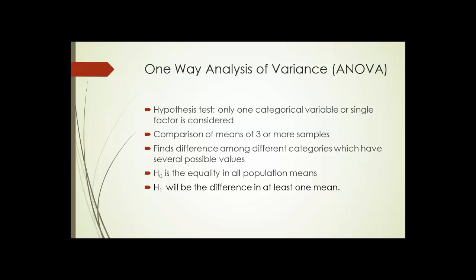It finds a difference among different categories which have several possible values. A null hypothesis is that the equality in all the population means, and a directional hypothesis is that there will be a difference in at least one mean.